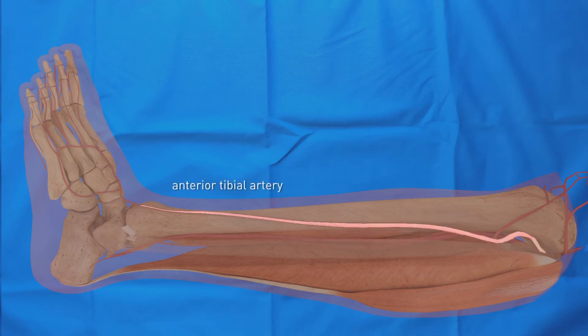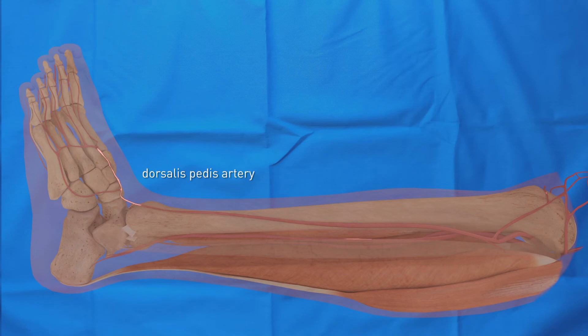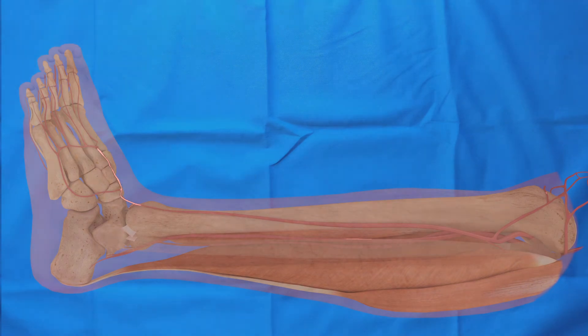The anterior tibial artery arises from the popliteal artery. Distally, it is located on the anterior side of the tibia. Upon crossing the ankle, it becomes the dorsalis pedis artery. This artery can be palpated on the dorsum of the foot between the navicular and the middle cuneiform bone, in line between the first and second metatarsal bones.